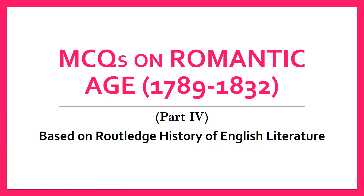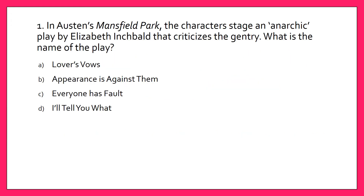The first question is: in Jane Austen's Mansfield Park, the characters stage an anarchic play by Elizabeth Inchbald that criticizes the gentry. What is the name of the play? Your options are A. Lover's Vows, B. Appearance is Against Them, C. Everyone Has Fault, or D. I'll Tell You What. The answer is A. Lover's Vows.